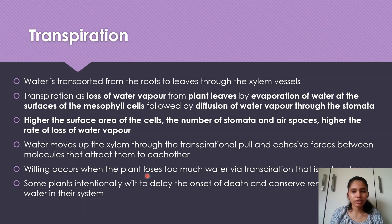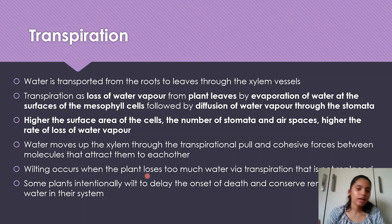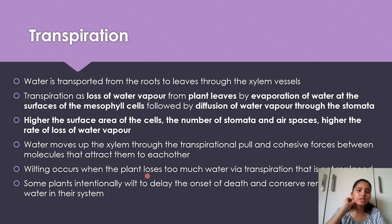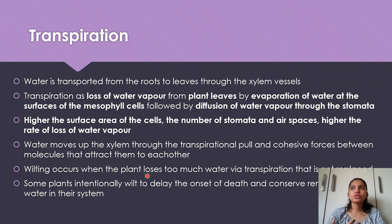Wilting occurs when the plant loses too much water via transpiration and the water is not replaced. Some plants intentionally wilt to delay the onset of death and conserve remaining water in their system, so as not to lose more water.